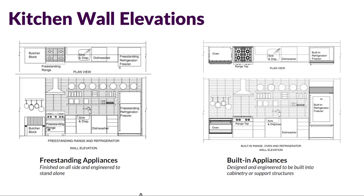So first, appliances and fixtures. The first thing we really need to think about when designing a kitchen is whether we're using freestanding appliances or built-in appliances. Here we see a couple of examples. On the left we see a plan view on top and an elevation view on the bottom of a basic kitchen design with freestanding appliances — specifically a freestanding refrigerator-freezer unit and a freestanding range.